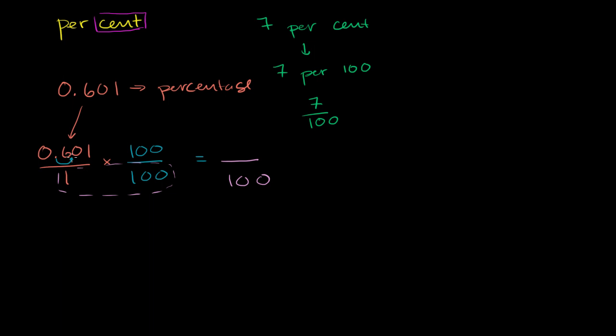And if I multiply it by 10 again, or if I multiply it by 100, I'm going to get 60.1. So 0.601 times 100 is 60.1.